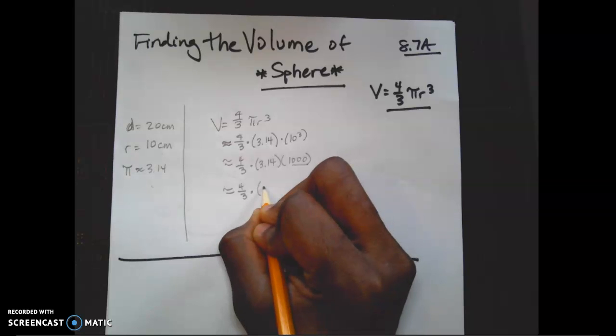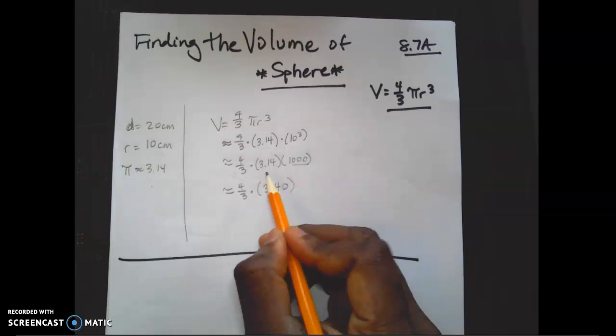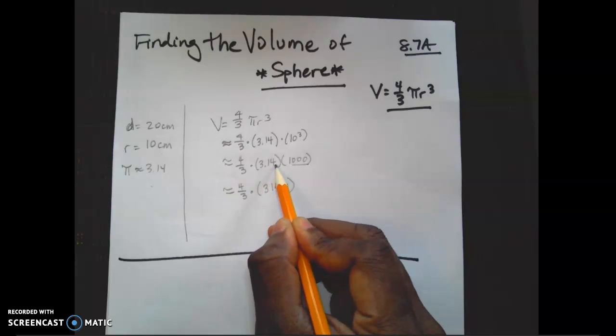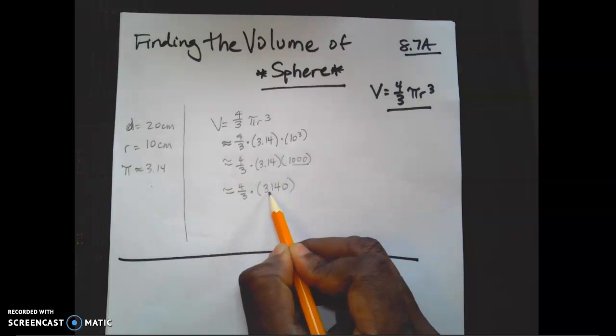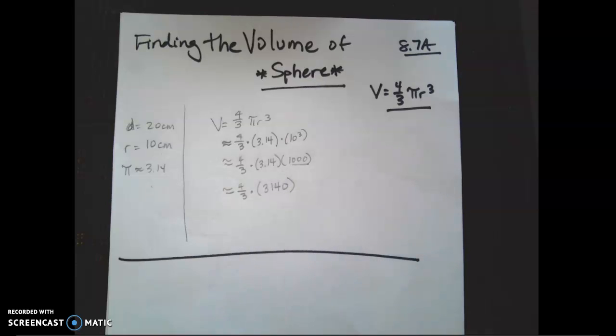So, again, I'm going to keep simplifying. So pretty much when I multiply these two, I can get rid of that. So this now becomes what? 3, 1, 4, 0. Because all that I did is I moved it over. 1, 2, 3. So, again, if the decimal is there, that's 1, 2, 3. The decimal is now there or assumed to be there. So all that I have to do now is simplify.